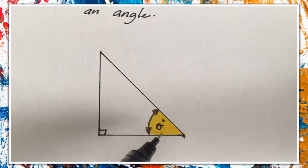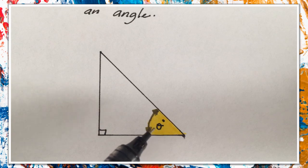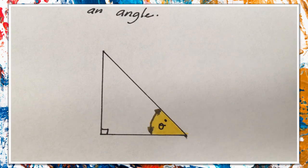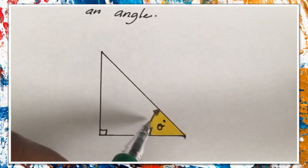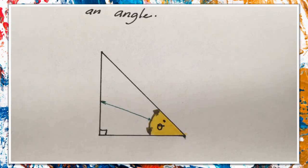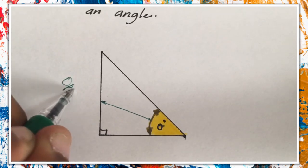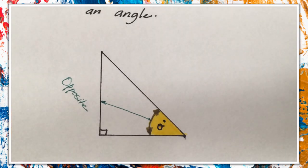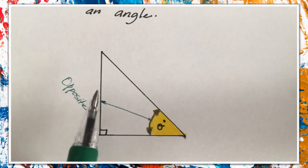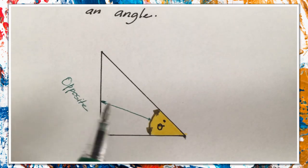This symbol represents theta and it represents any angle — for example, this could be 30 degrees, 45 degrees, or 60 degrees. The first side I'm going to introduce is what we call the opposite. If I draw a straight line coming right across from the angle, it will touch the line called the opposite. The reason it's called the opposite is because if the angle is on the left, the line is on the right — and if the angle is on the right, the line is on the left. So the opposite is the line across from the given angle.